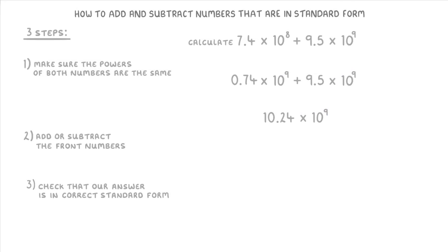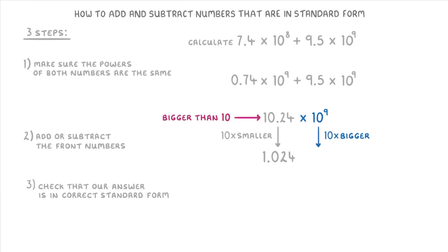For step 3, we check that our answer is in standard form — and in this case it actually isn't, because the front number 10.24 is bigger than 10. To fix this we change it to 1.024 by making it 10 times smaller, but to balance that we make the times 10 part 10 times bigger by increasing the power from 9 to 10. So 1.024 times 10 to the power of 10 is our final answer.